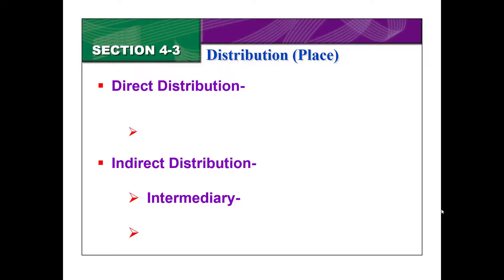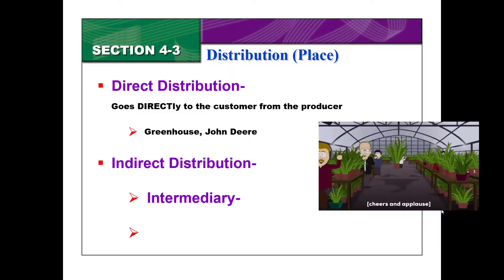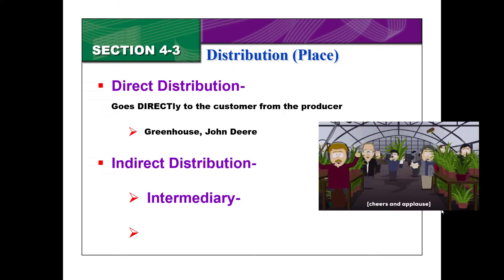First, we have direct distribution. That was the example on the left — this is where the product goes directly to the customer from the producer. That was when my dad and brother directly picked up their combine from John Deere. Another great example would be a greenhouse: if a greenhouse grows their own flowers and you directly pick them up from there, that is direct distribution.